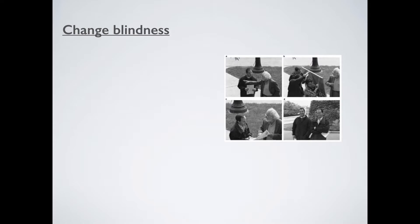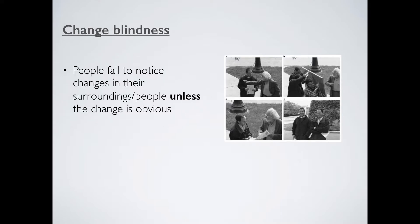Next is something absolutely fascinating called change blindness. The average person will fail to notice things changing around them — whether it's a scenario, a picture, an object, or even a person they're talking to — unless the change is really obvious. Here's one example: a researcher approaches a man with white hair and asks for directions. Mid-conversation, someone in a checkered shirt walks between them as cover, and the researcher is replaced by a completely different person. The man with white hair has no idea the person has changed and continues as if nothing is the matter.